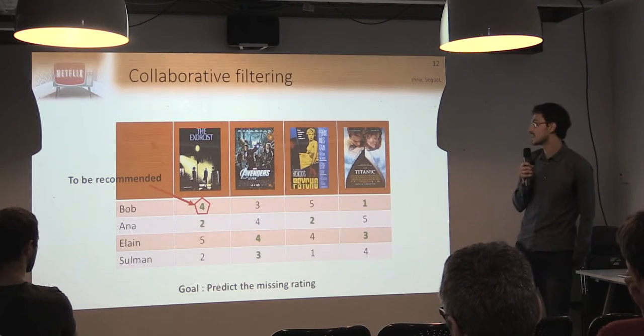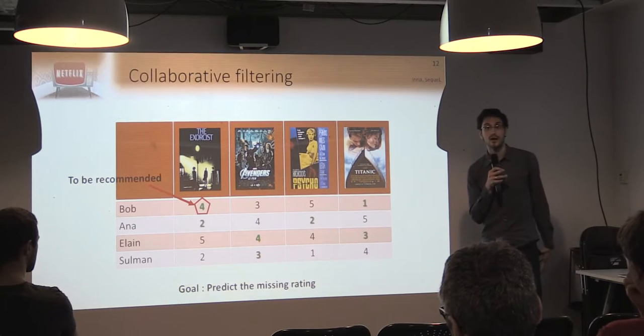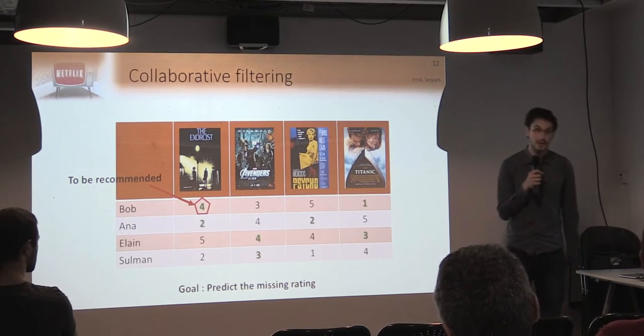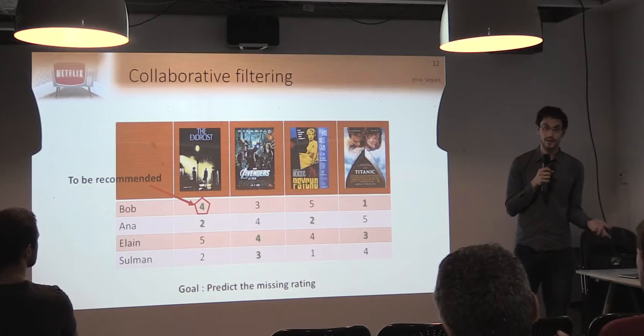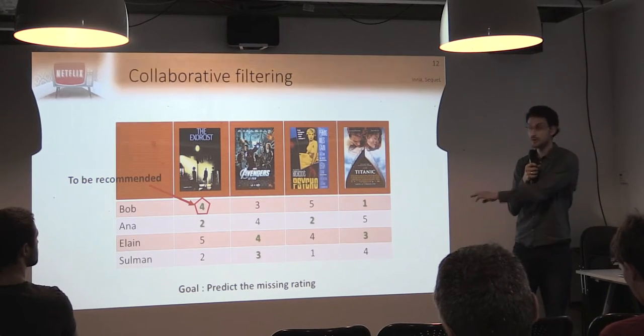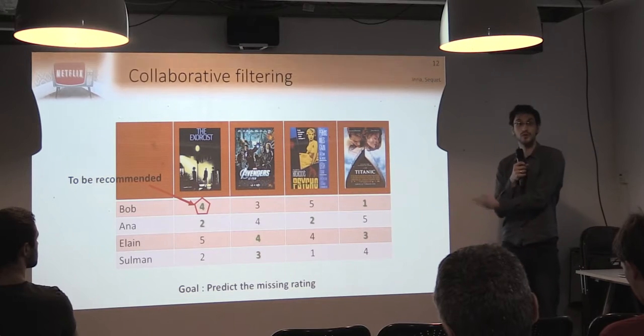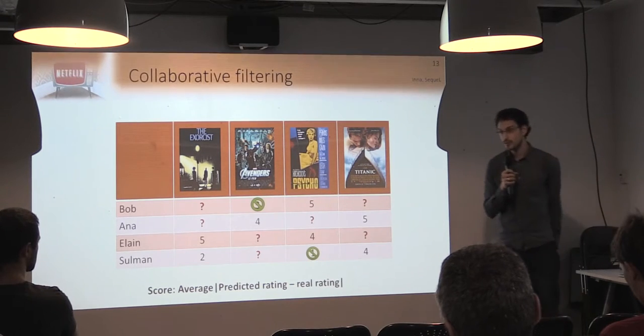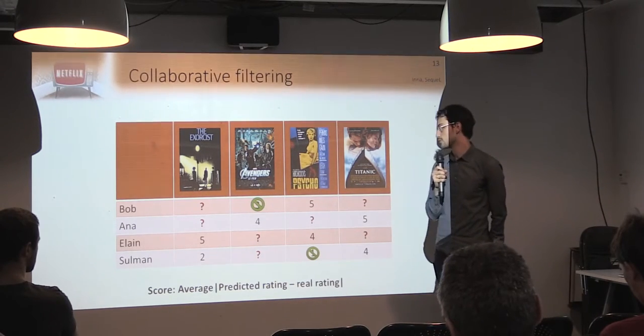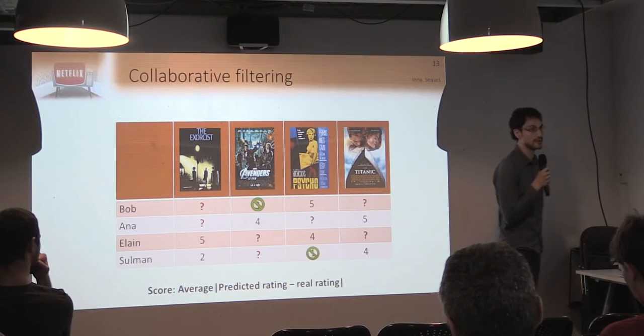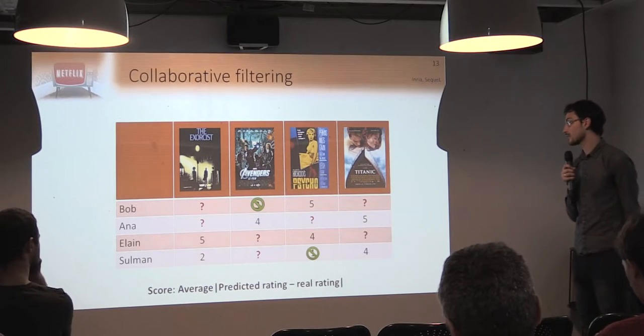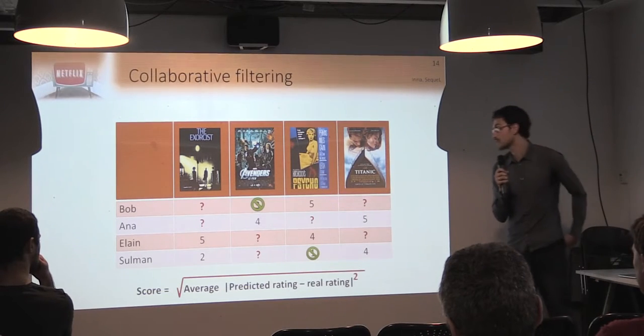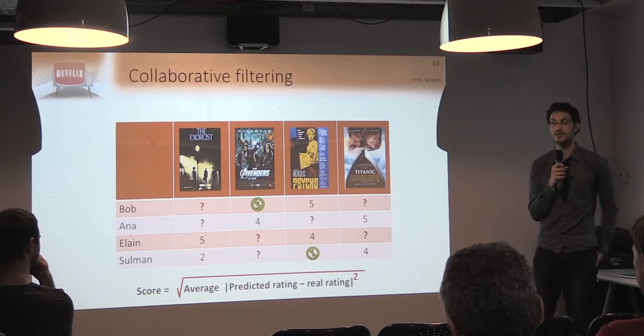So in this case, Bob will be recommended the Exorcist. Some other techniques exist that try to rank the movies one after the others. I'm not going to go into this detail. For now, I'm going to focus on how to predict the rating and increase the quality of this prediction. So if we want to know the quality of those trainings, we're going to hide a few ratings from our matrix, predict them, and compute the error on it. The most classic way is to compute the root mean square error, the quadratic error on this predicted rating.